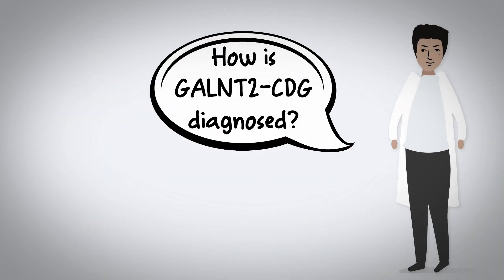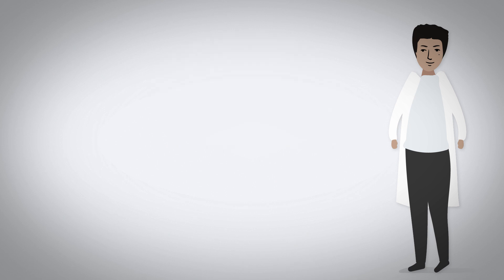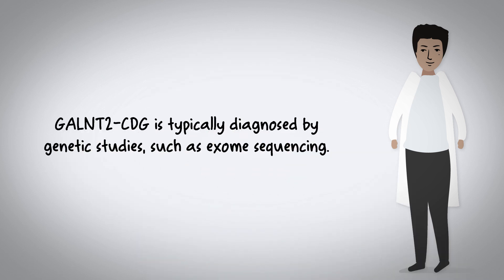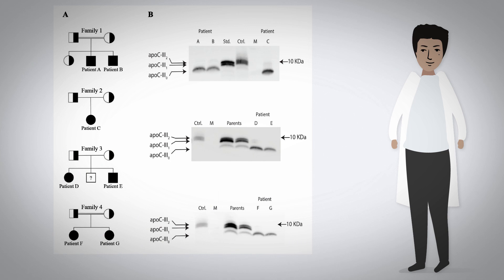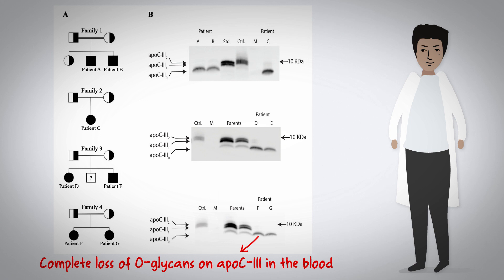How is GALNT2-CDG diagnosed? GALNT2-CDG is typically diagnosed by genetic studies, such as exome sequencing. The protein polypeptide N-acetyl-galactosaminotransferase-2 also specifically glycosylates a protein called APO-C3. To aid in diagnosis, we validated complete loss of O-glycans on APO-C3 in the blood as a diagnostic assay for GALNT2-CDG, which is already available as a clinical test.